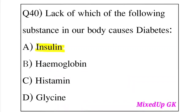Question 40: Lack of which of the following substances in our body causes diabetes? Option A: Insulin. Option B: Hemoglobin. Option C: Histamine. Option D: Glycine. The answer is Option A, Insulin. Lack of insulin in the body causes diabetes.